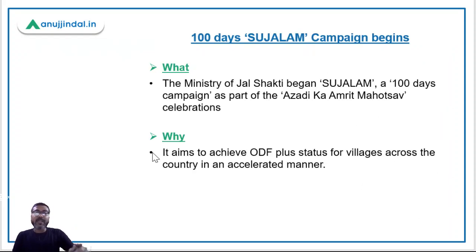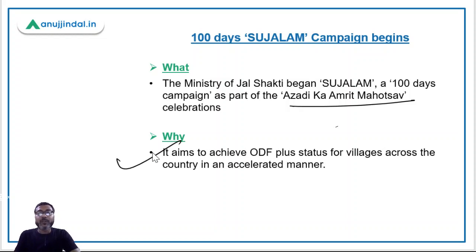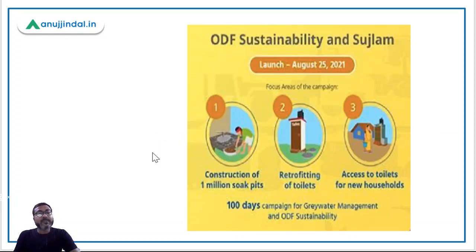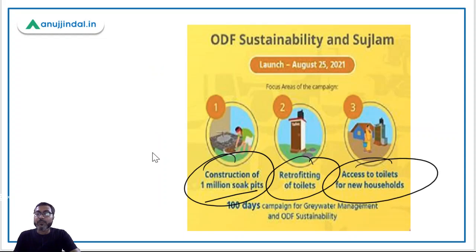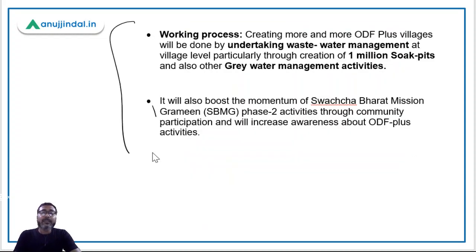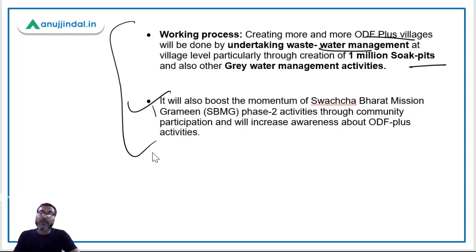The Sujalam campaign is a 100-day campaign launched as part of Azadi Ka Amrit Mahotsav, as in 2022 we are completing 75 years of independence. This campaign aims to achieve ODF Plus status for all villages across the country in an accelerated manner. The three focus areas are: construction of one million soak pits, retrofitting of toilets, and access to toilets for new households. It will boost the momentum of Swachh Bharat Mission Grameen Phase 2, announced in Budget 2021.